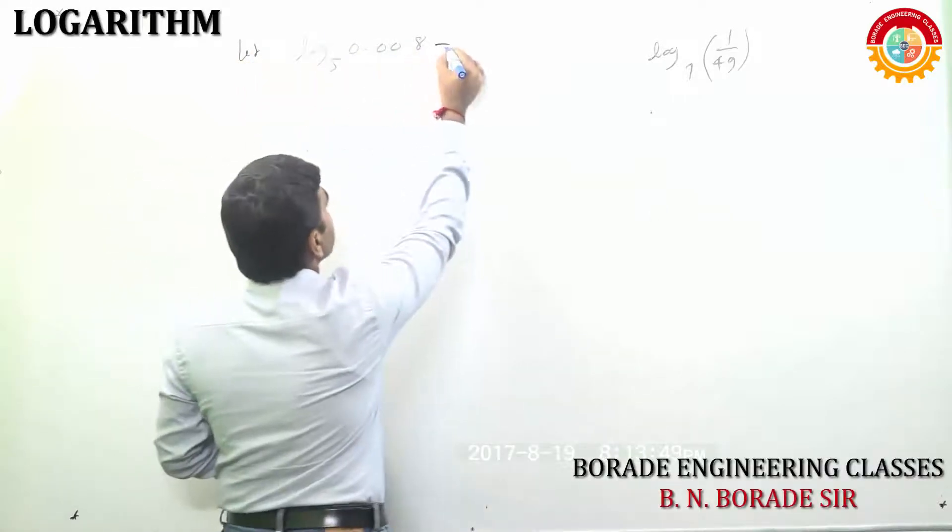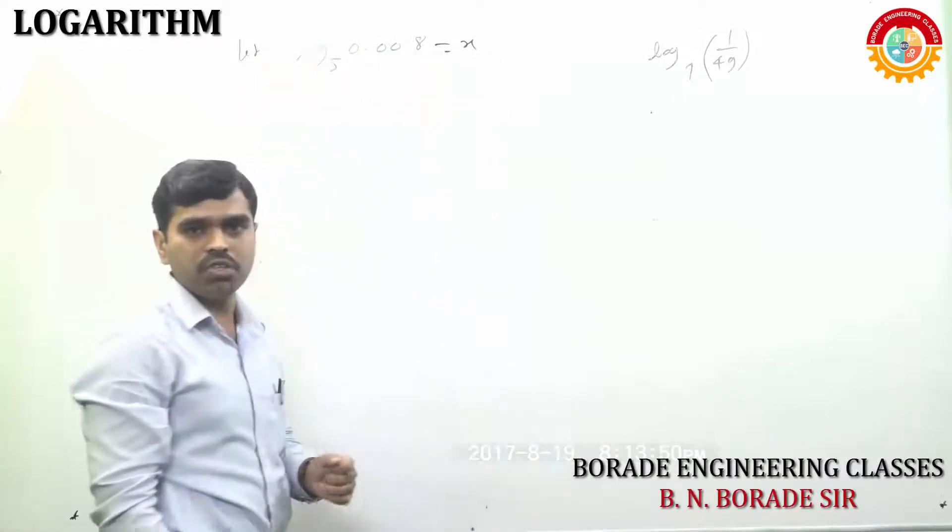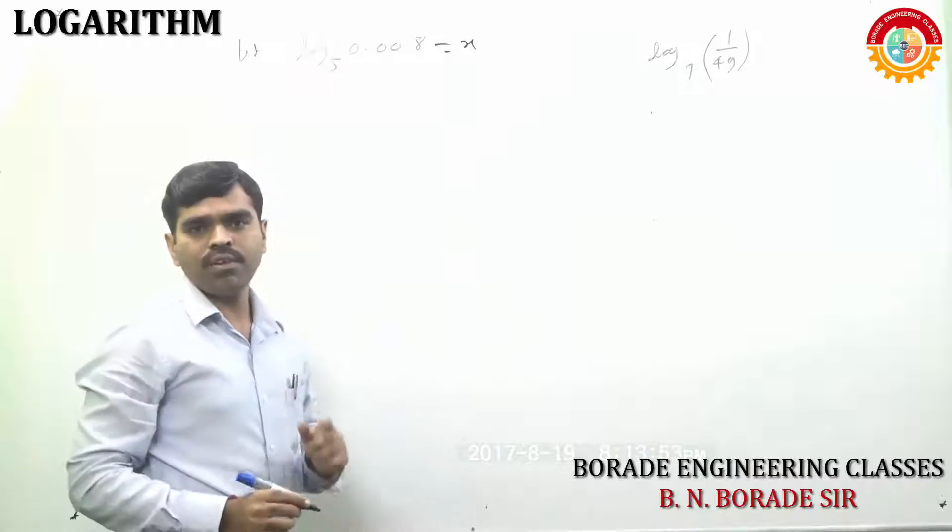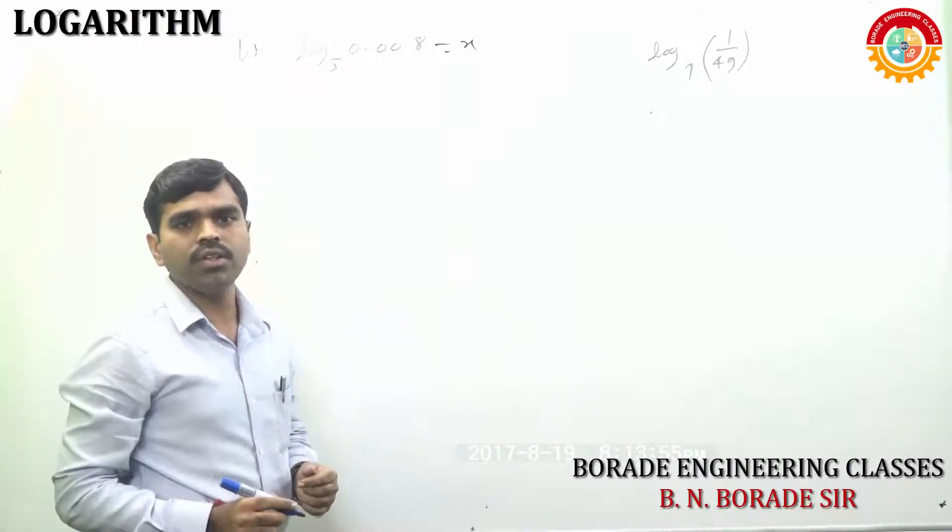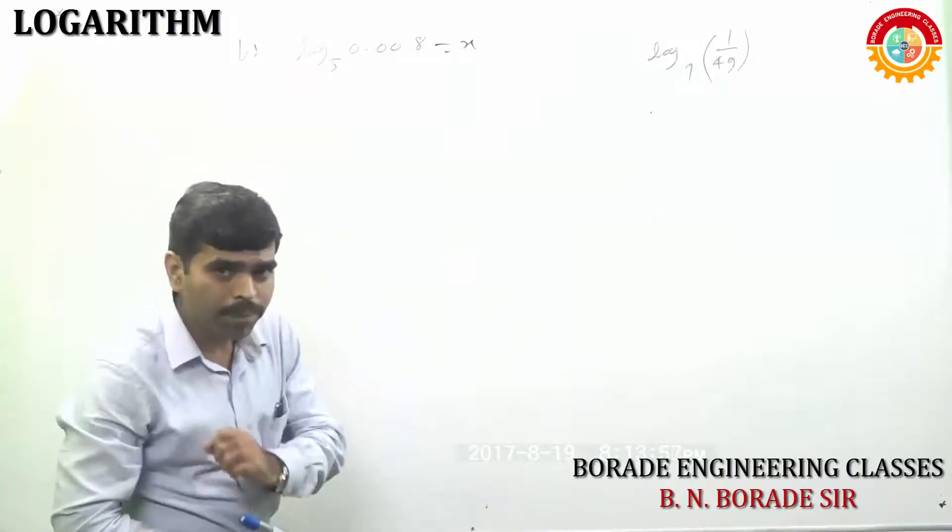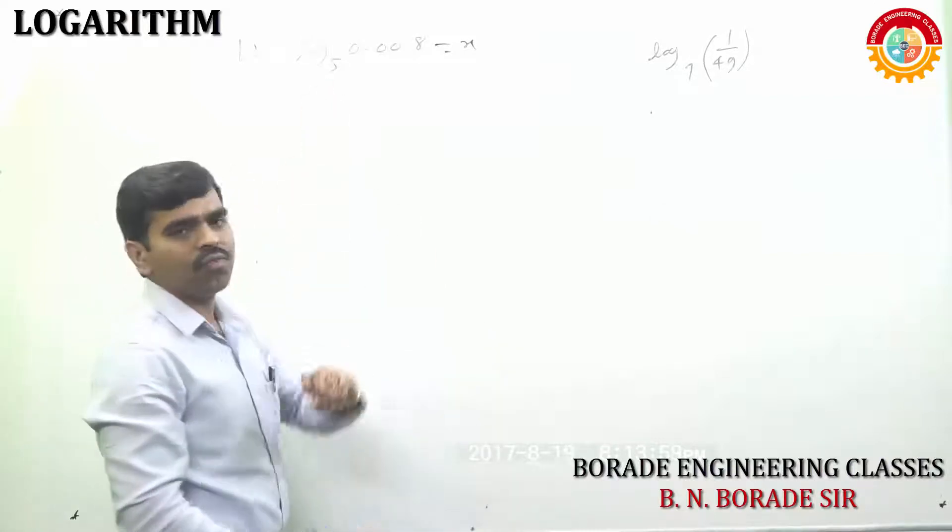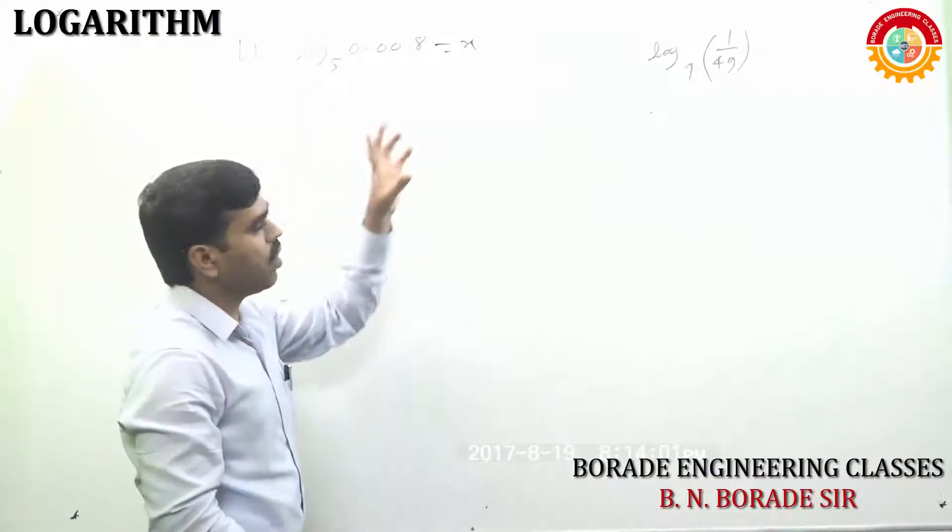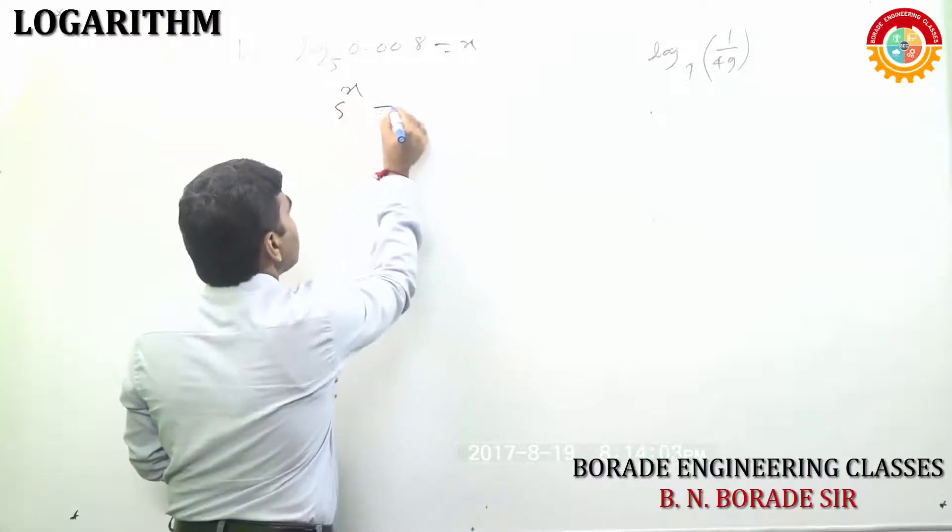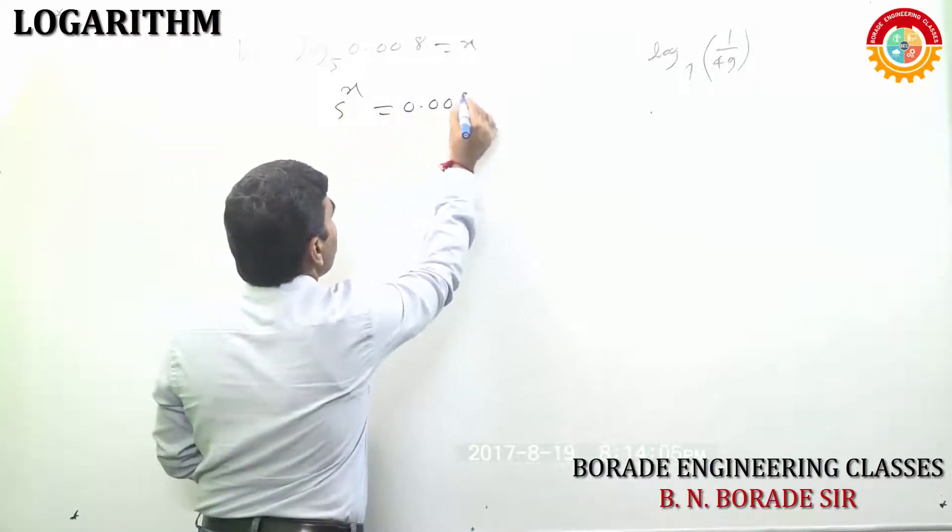This is equal to x. Jo peranth mahit nahi toh peranth x consider karata hai. Aata yada, jar value find out karai chhi hai. Try to convert this into exponential form. Tell me the base - 5. What is the power? X. So, we can write 5 raised to x equal to 0.008.